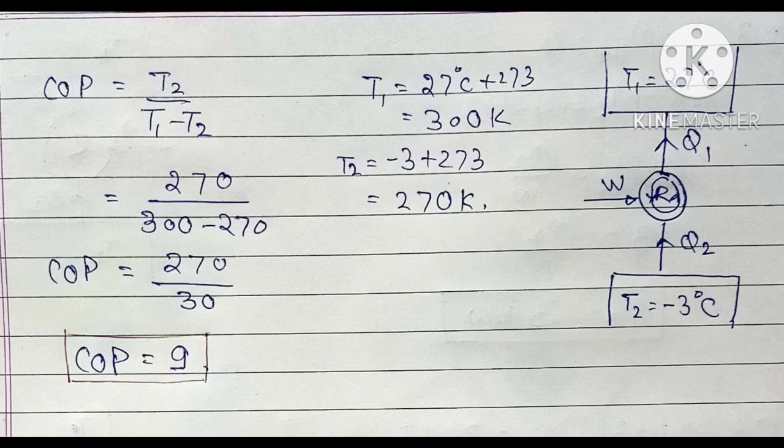Similarly, T1 is 27 degree centigrade, so adding 273 gives 300 Kelvin. Using the formula COP = T2 / (T1 - T2), COP = 270 / (300 - 270) = 9. In this way we can find out the COP of this refrigerator.